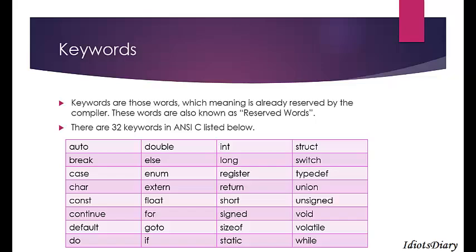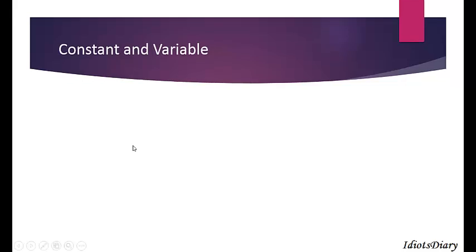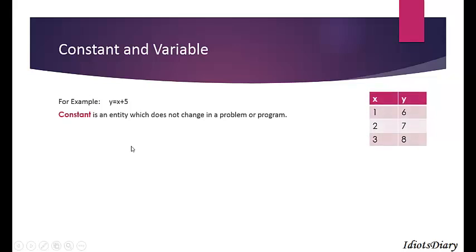Read the keywords carefully and then we will go further. Next, we will discuss about constants and variables. In the expression y = x + 5, if x is 1 then y becomes 6; if x is 2 then y becomes 7; if x is 3 then y becomes 8. Here x and y change, so they are called variables. The value 5 remains unchanged, so it is called the constant. A constant is an entity which does not change in a problem or program.